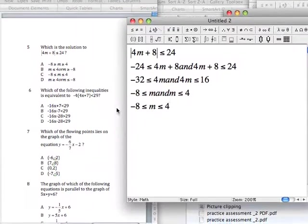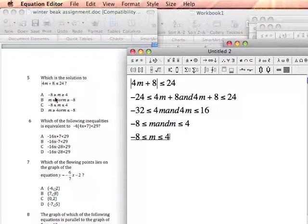Now which answer matches all that? Not A, because they're both pointing to the right, that would be more than. B has the word 'or', that's not what I'm looking for. C has negative 8 less than or equal to m, less than or equal to 4. That matches up with what I'm looking for, and that's your answer. I hope this helps.